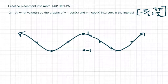Hi, everyone. This is a practice placement into math 1431, number 21 through 25. So they want to know, this is actually an easy problem if you know your graphs. They want to know where cosine of x and secant of x intersect in this particular interval. So I kind of went ahead and drew cosine. You should know how to get the characteristic curve and then you should know these four quadrantal type points.